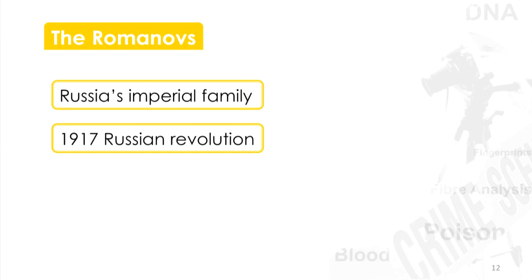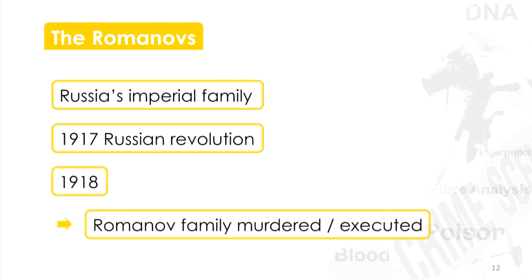In 1918, on the orders of Lenin, they were murdered — or executed, depending on your point of view. The Bolsheviks attempted to destroy the remains, and the bones of the royal family were eventually buried in the woods. The Bolsheviks hoped that they would be forgotten. But they weren't, and after the fall of communism and the fall of the Soviet Union, the bones were excavated from where they'd been hidden.